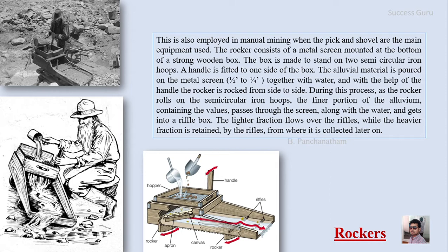With the help of the handle, the rocker is rocked from side to side. As the rocker rolls on the semi-circular iron hoops, the finer portion of the alluvium containing the valuable material passes through the screen along with the water and gets into a riffle box. The lighter fraction flows over the riffles while the heavier fraction is retained by the riffles, from where it is collected.